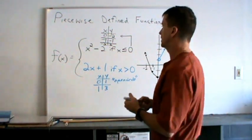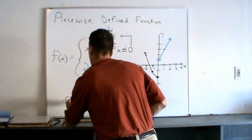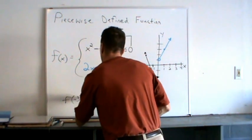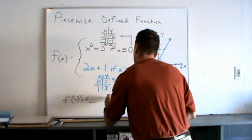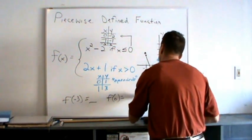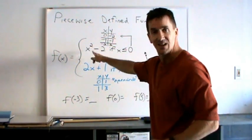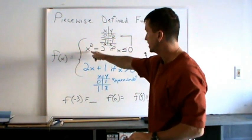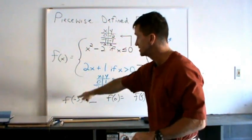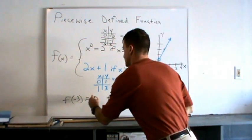And you'll also find sometimes you're asked to evaluate this. So if we had to evaluate what's going on at f equal to negative 3, or f equals 0, or f equals 5, just make sure you substitute it into the right piece. So if you substitute negative 3 in here, because negative 3 is less than or equal to 0, you get 9 minus 2, which is 7.